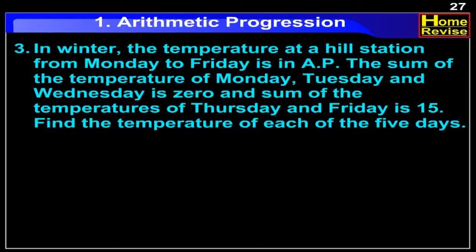In winter, the temperature at a hill station from Monday to Friday is in arithmetic progression. The sum of the temperatures of Monday, Tuesday, and Wednesday is zero, and the sum of temperatures of Thursday and Friday is 15. Find the temperature of each of the 5 days.